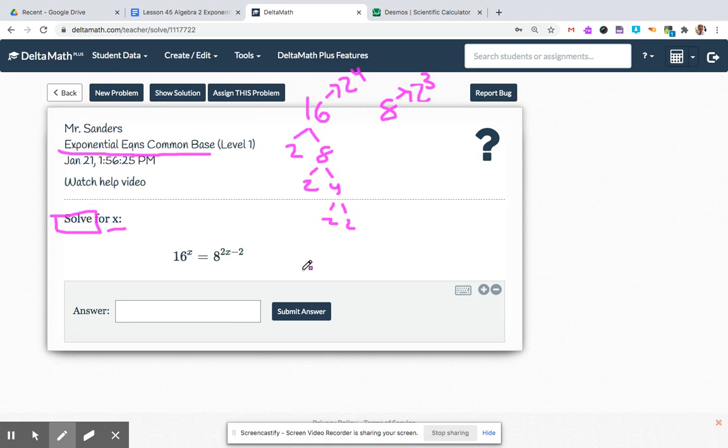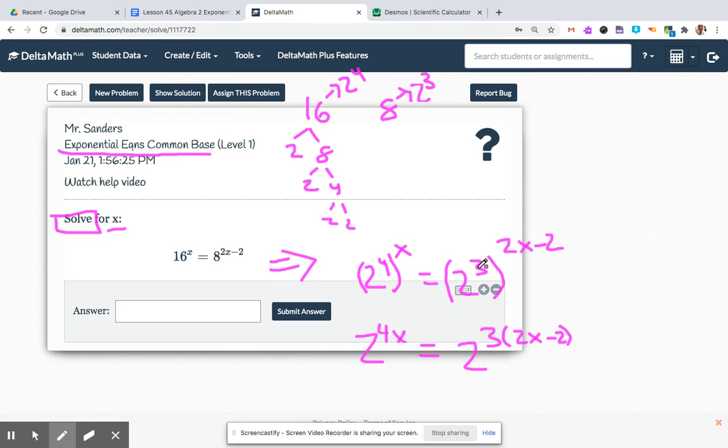All right, so then we would rewrite this as 2 to the 4th, that's just the 16, and there's that x as the exponent still, equals 2 cubed, that's just the 8, and then the exponent is 2x minus 2. Properties of exponents mean multiply, so this turns into 2 to the 4x equals 2 to the 3, don't forget your parentheses on that exponent. All of that exponent gets multiplied by that 3. When the bases are the same, exponents are the same.